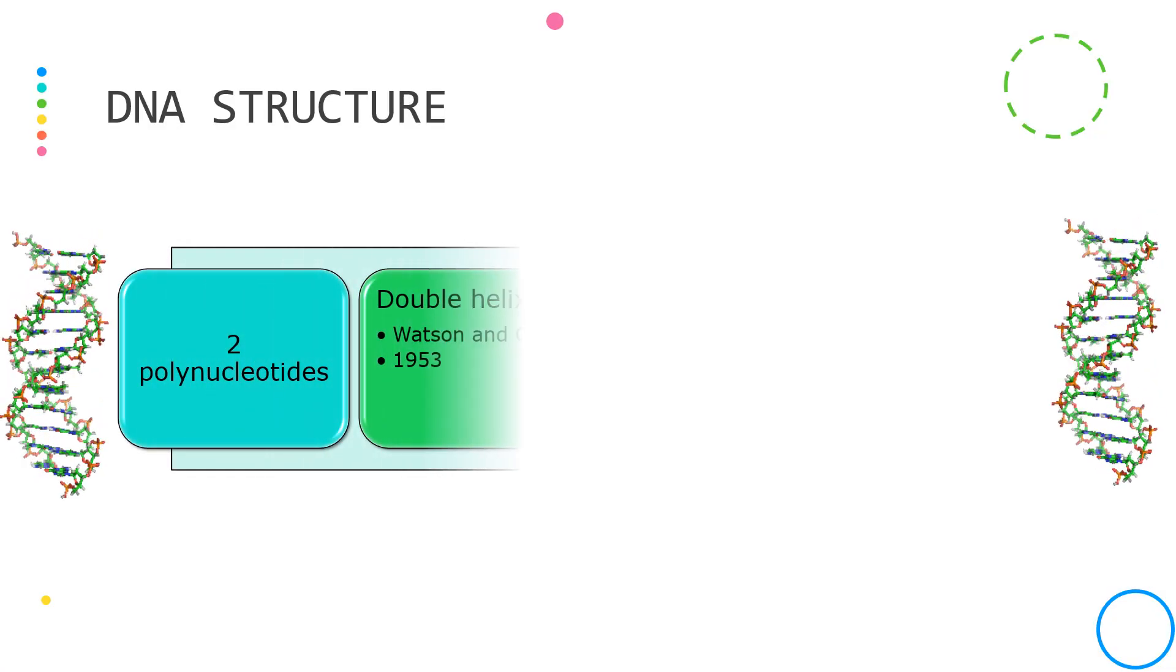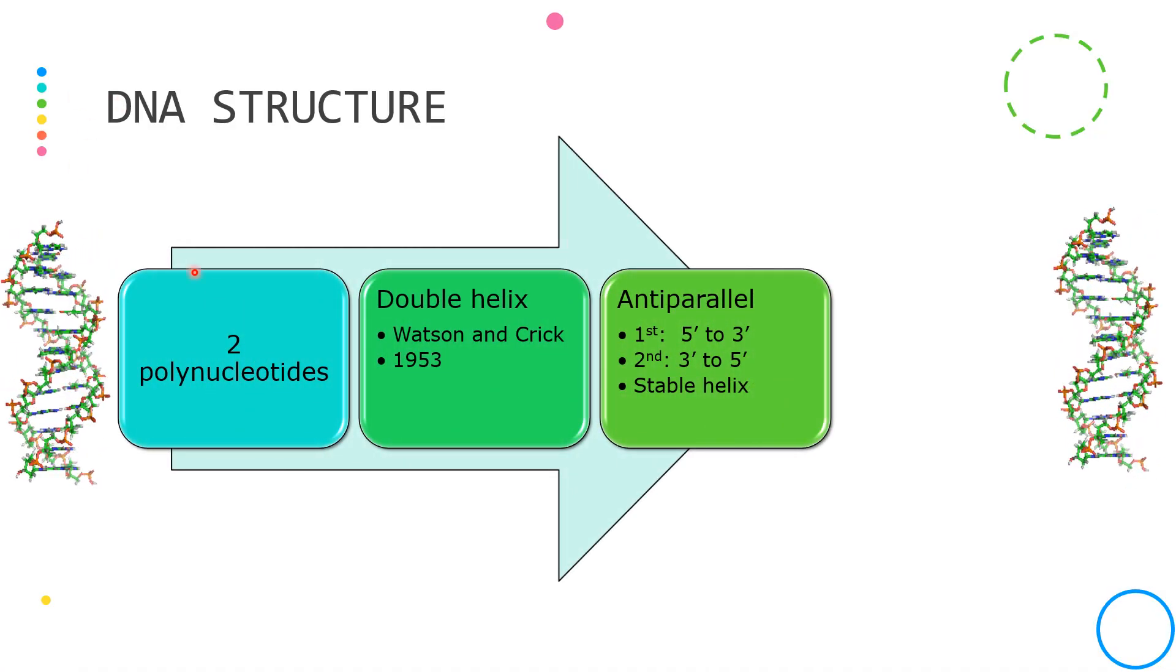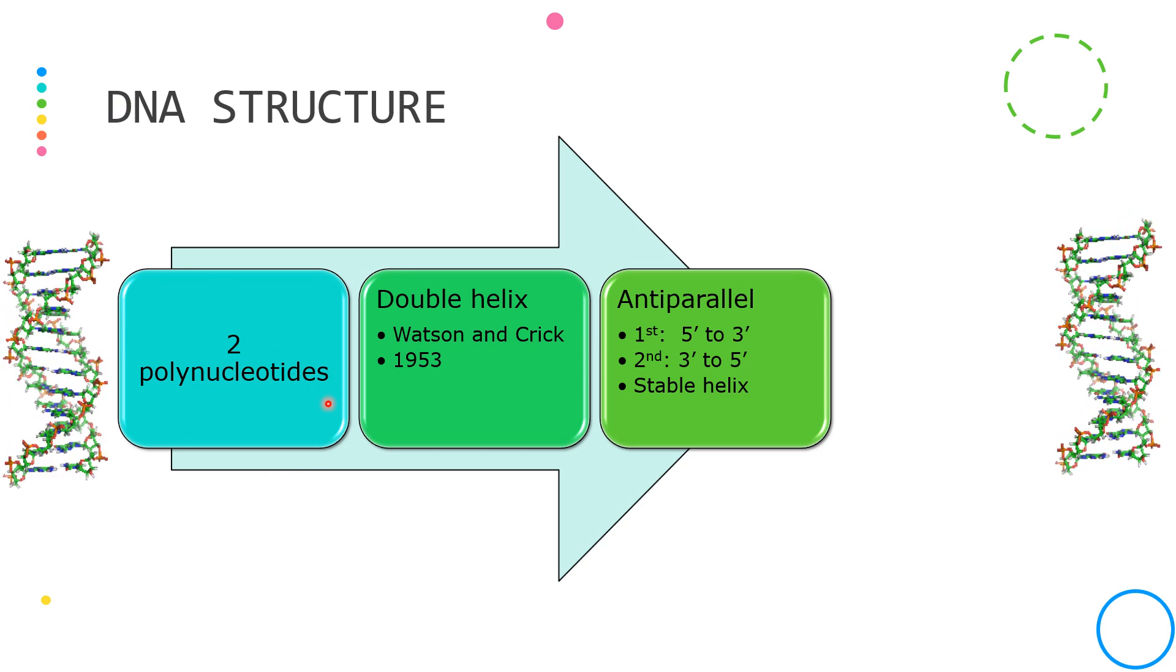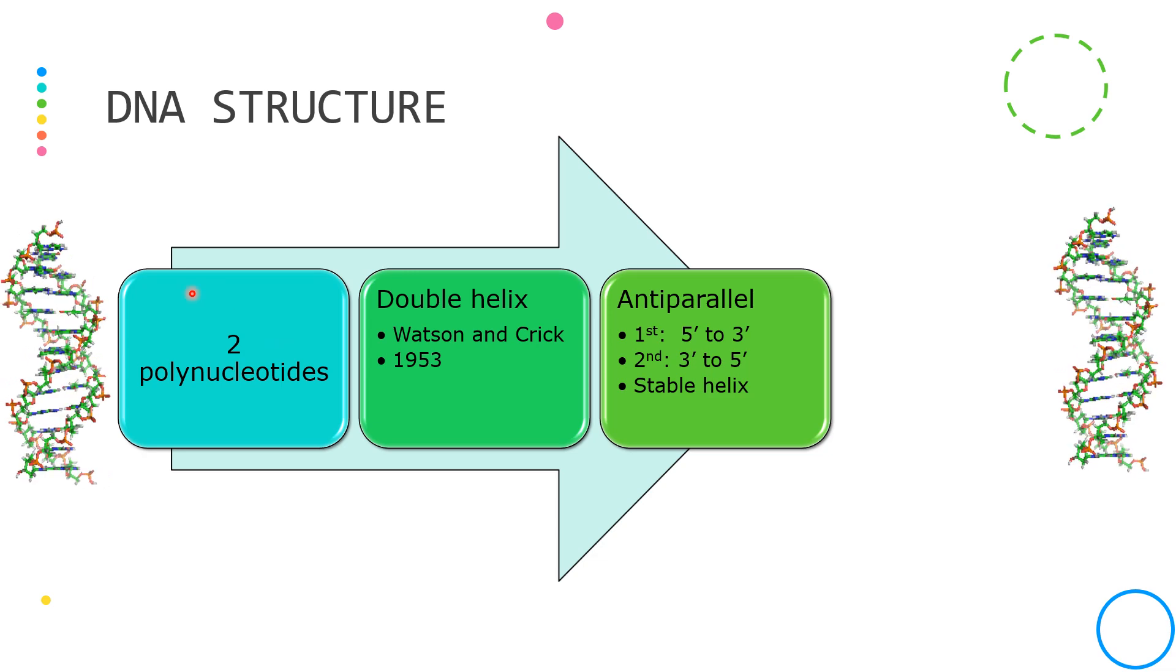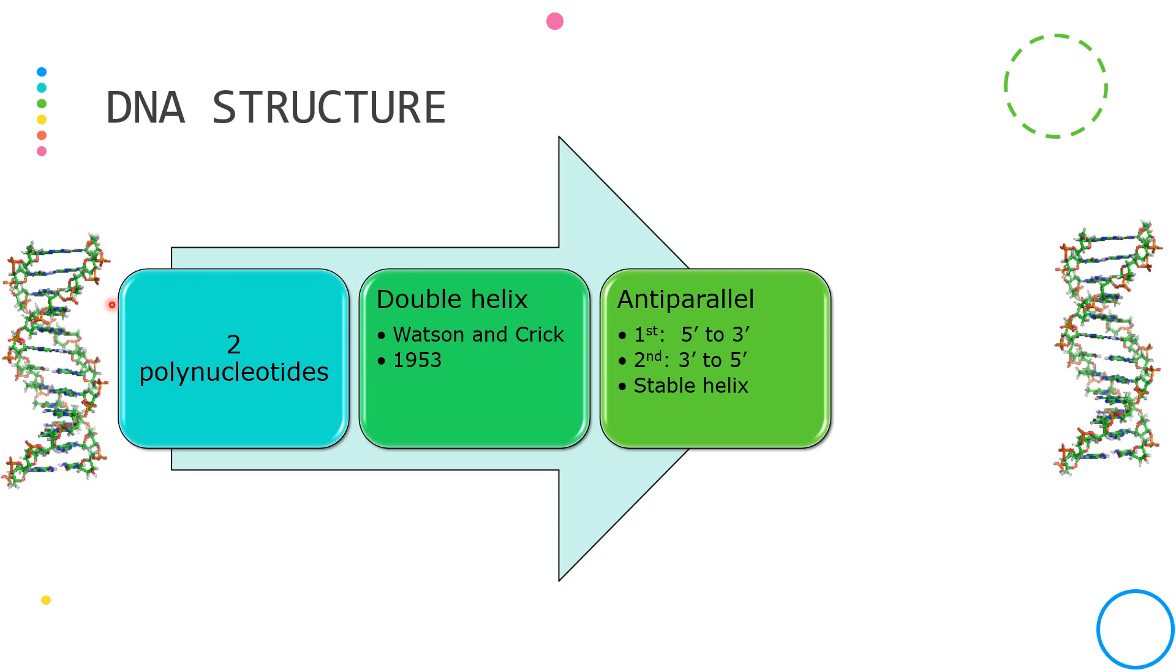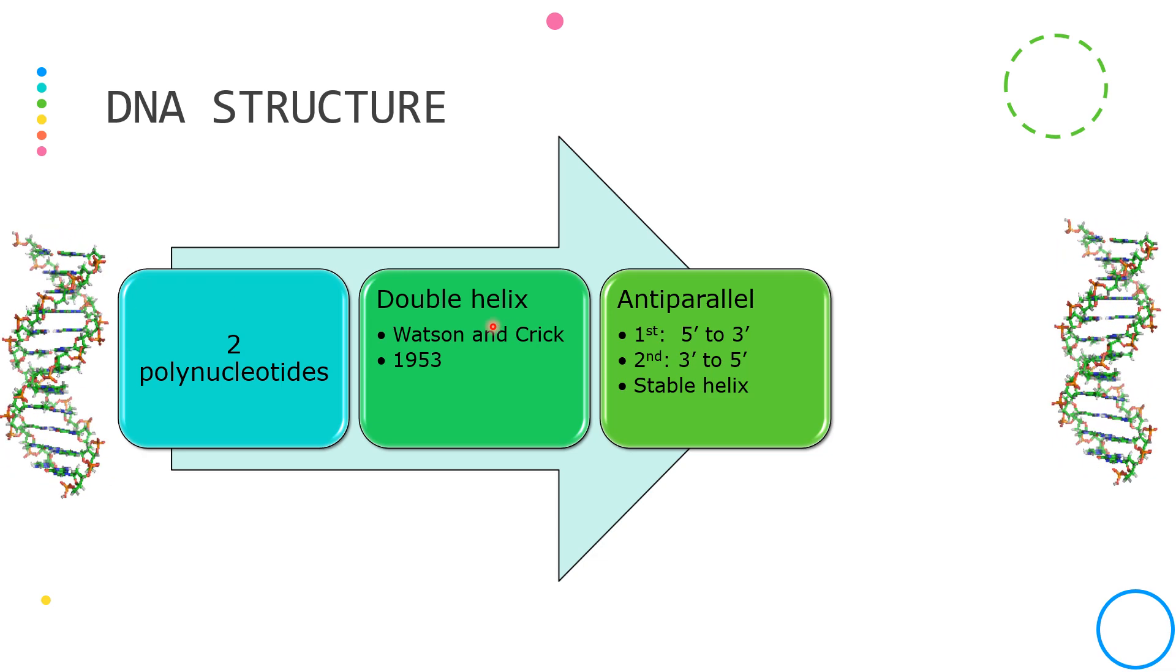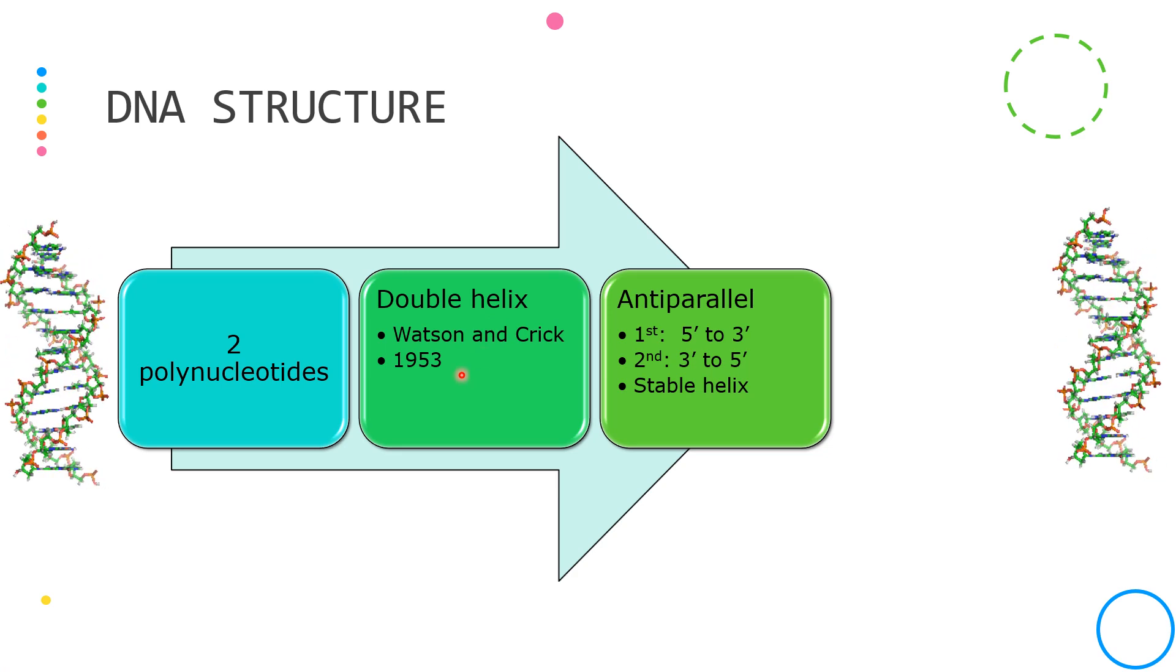In living cells, DNA molecules almost always contain two polynucleotides as explained previously which are wrapped around one another to form the famous double helix structure which was discovered by James Watson and Francis Crick in 1953.